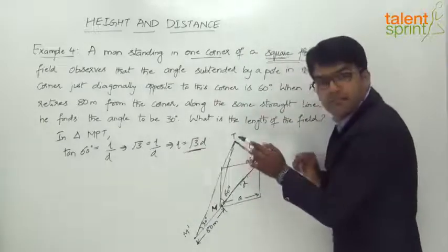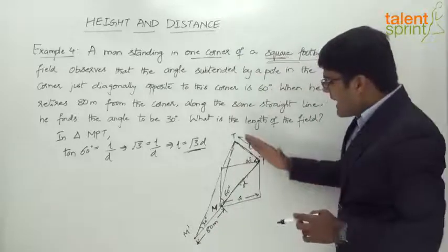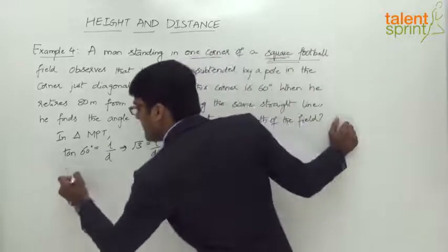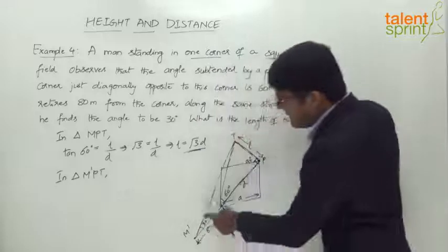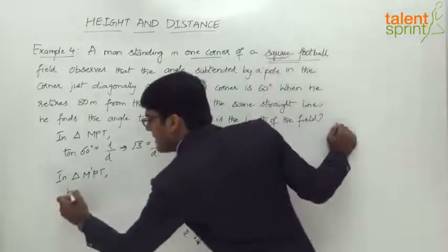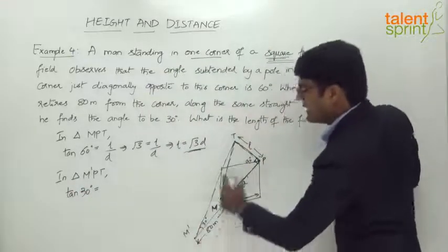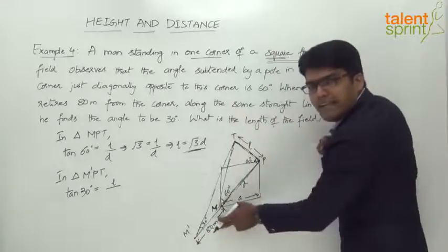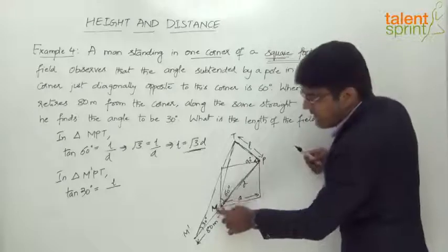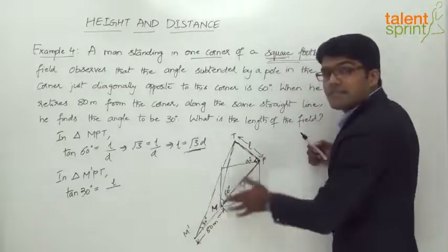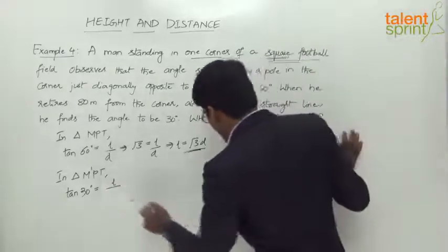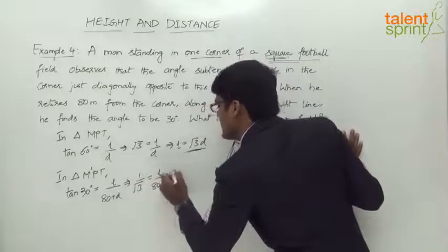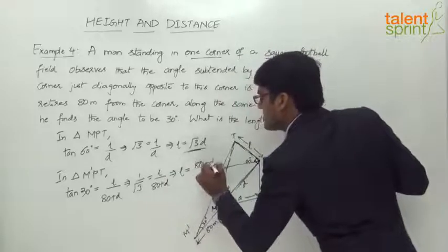Now let us consider the second triangle: M dash, P, T. The angle at P is 90 degrees — the pole with the ground is 90 degrees. In triangle M dash P T, the angle of elevation is 30 degrees. Tan 30 degrees equals opposite over adjacent, which is L over (80 + D) — because he has retired back by 80 meters, so the base is now 80 plus D. Tan 30 is 1 by root 3, so 1 by root 3 equals L by (80 + D).